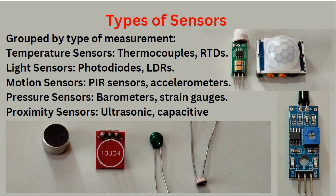Then you have motion sensors — PIR sensors. On the right-hand side, you can see PIR sensors: one smaller and one bigger. What is PIR? It stands for Passive Infrared sensor. There is also an accelerometer for motion sensing. If you move around in front of this sensor, automatically it will give you high or low signals. Pressure sensors include barometers and strain gauges, used in chemical factories and other industrial facilities.